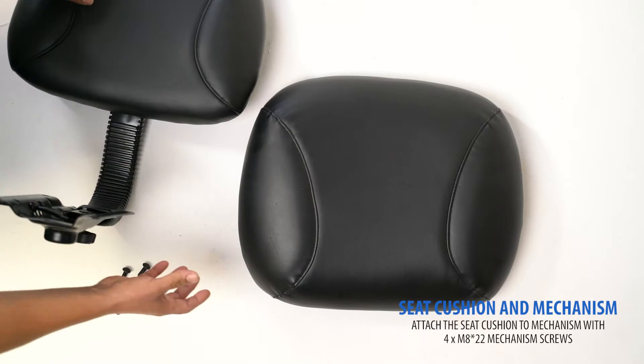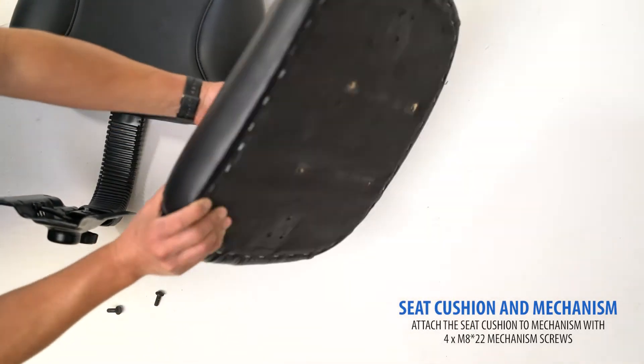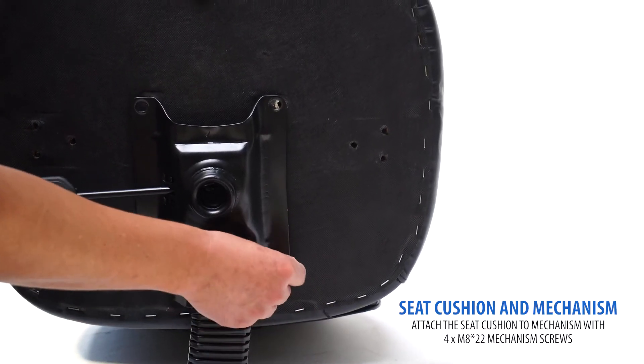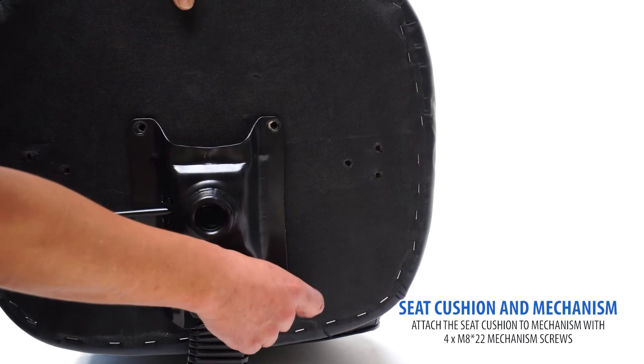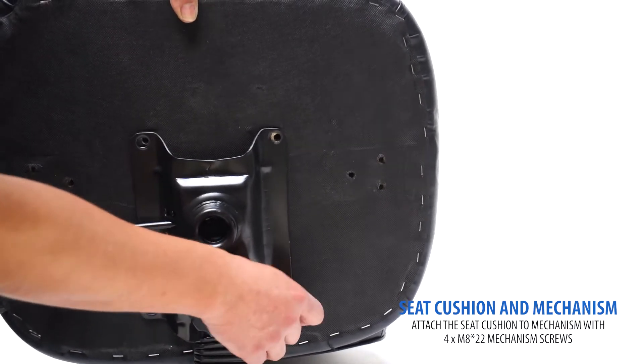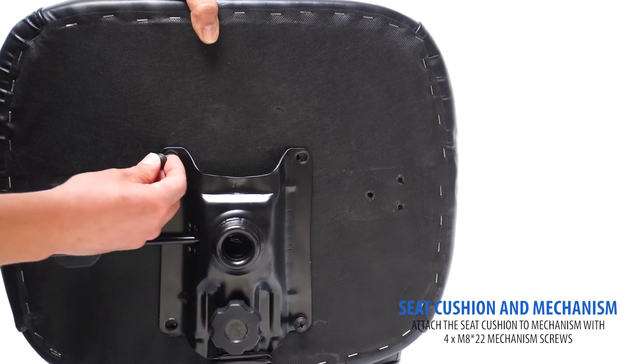Next, locate your seat cushion. Using the included M822 mechanism screws, hand thread the screws to connect your mechanism to the bottom of your seat cushion.